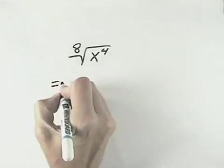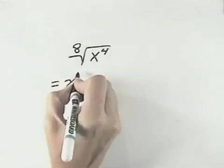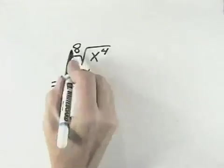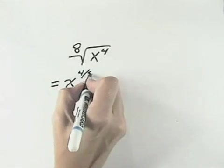So looking at this one, we're going to first take our radical expression and write the exponents in rational form. Remember that we have x, and the exponent is the numerator, and the radical, or root, is the denominator.